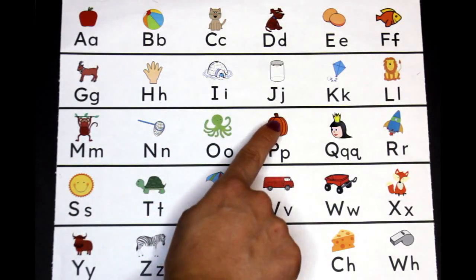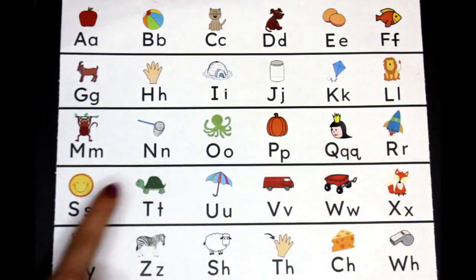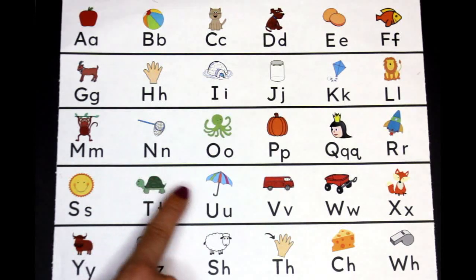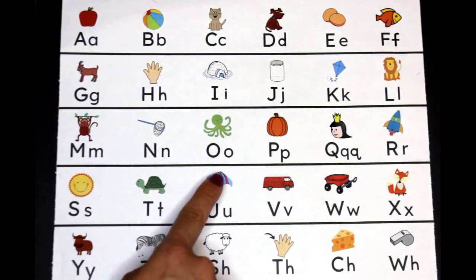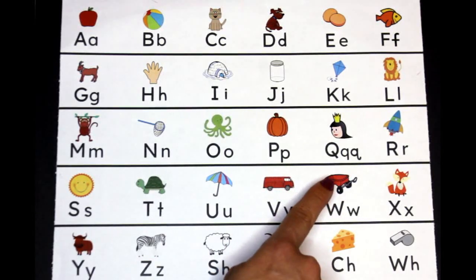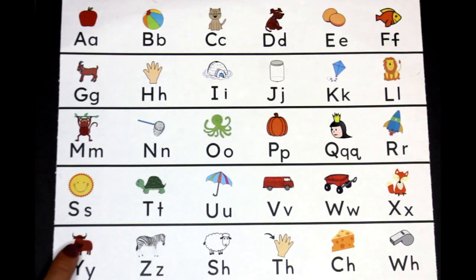P-p-pumpkin, Qu-qu-queen, and R-r-rocket. S-s-sun and T-t-turtle. U-u-umbrella, V-v-van, W-w-wagon, X-x-box. Y-y-yak and Z-z-zebra. Sh-sh-sheep and...